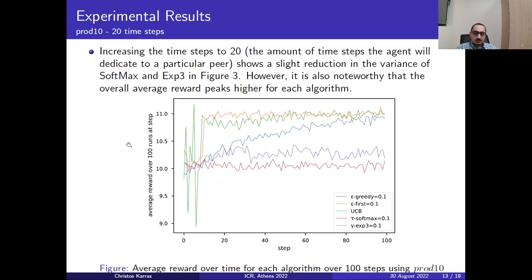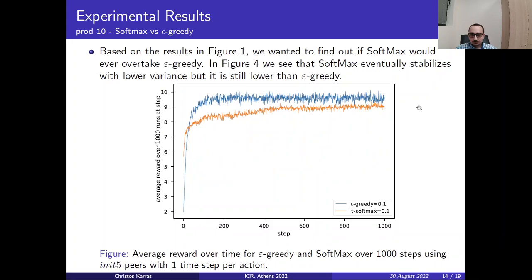Moving on to another experiment, we increased the time steps to 20 rather than 1 time step per action. So this is the amount of time steps that the agent will dedicate to a particular peer. This shows a slight reduction in the variance of the softmax and EXP3. However it's also noteworthy that the overall average reward peaks higher for each algorithm. Once again the average reward is higher than 11. Here we can observe that the UCB algorithm, which is highlighted with the green color in the previous figures and experiments, peaked higher across all different algorithmic choices. But here, where we increased the time steps to 20, the ε-first or epsilon first overtook and performed the best in this scenario, maintaining its steady performance.